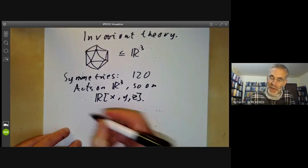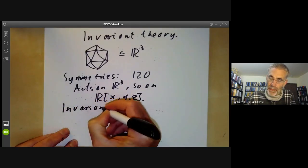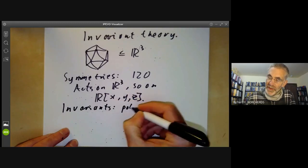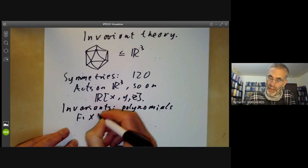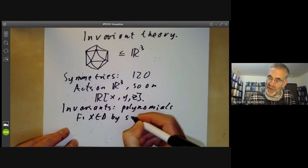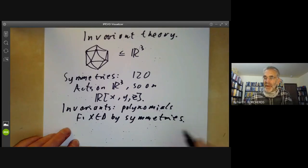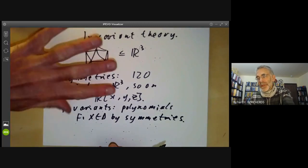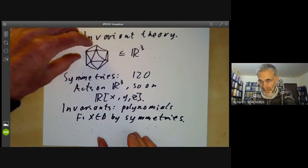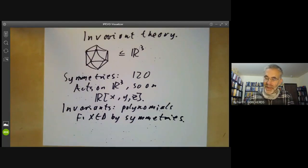Now we can ask the following question: What are the invariants? These are just the polynomials fixed by the symmetries. In other words, we want a polynomial function on R³ such that if you rotate R³ preserving the icosahedron, then that polynomial remains the same.